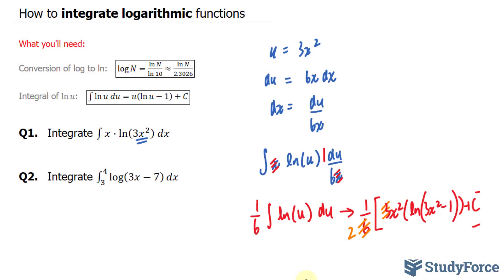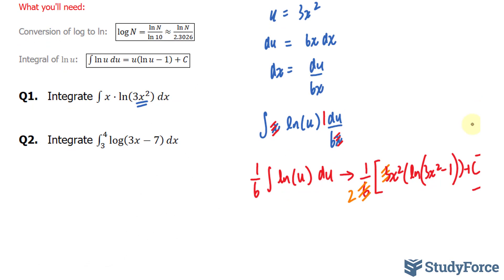In question 2, they want us to integrate between 3 and 4 log 3x minus 7 dx. What we have to do is convert this log expression so that it has the base e. In other words, we want to make this into a natural log. And the way we do that is we use this conversion,